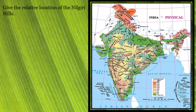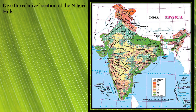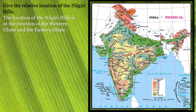Next question: give the relative location of the Nilgiri hills. The Nilgiri hills lie in the south, and the answer is that their location is at the junction — that is, at the union of the Western Ghats and the Eastern Ghats.